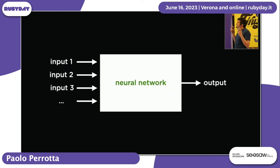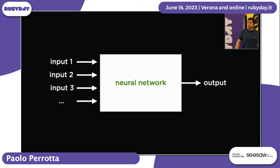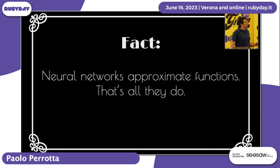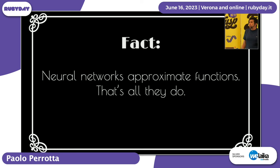Once you have the function, you can carry your little function box around, give it the input, and it will come up with an output. That's the first fact: neural networks approximate functions. That's their job.